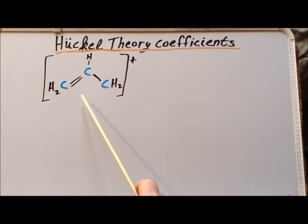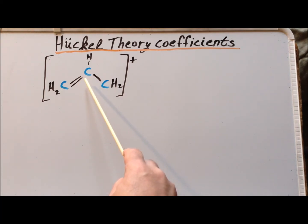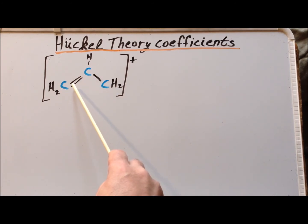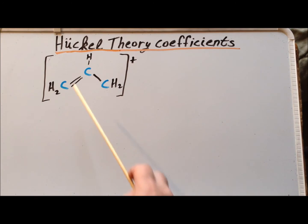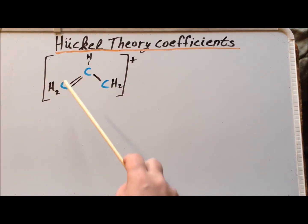Here is a quick sketch of the allyl cation, or at least one of two possible resonance forms. We can have the double bond between this carbon and that carbon, or between this carbon and that carbon. So effectively, rather than having a double bond and a single bond because of resonance, we have delocalization of the pi system over all three carbons.